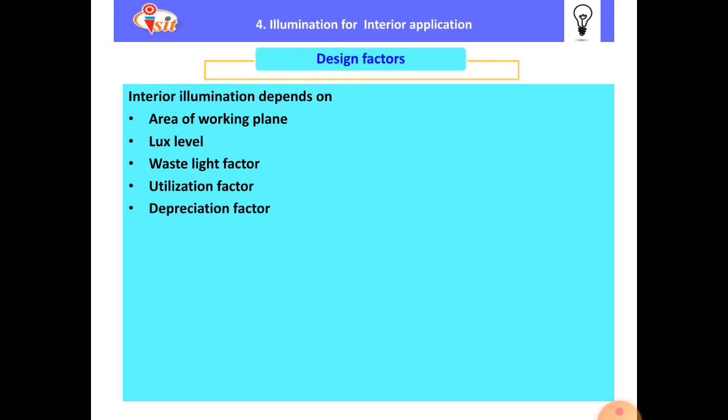Then the depreciation factor, which depends on the luminaire as well as the type of lamp used — interior illumination depends on the depreciation factor. Then the wattage of lamp: what kind of wattage we have to install on the working area, and the type of work to be done over the working plane. According to that, we find out the wattage. After that, illumination efficiency of the lamp — interior illumination also depends on the illumination efficiency.